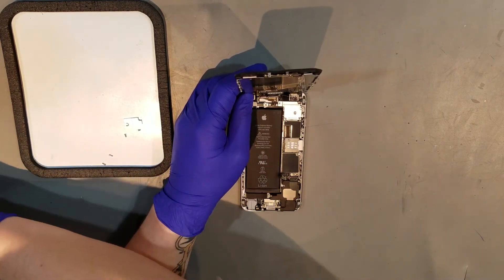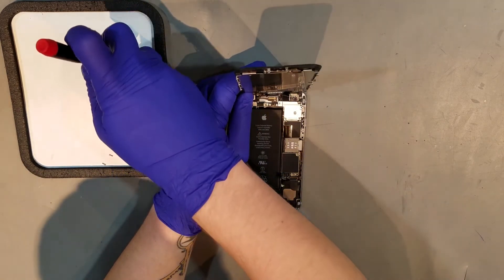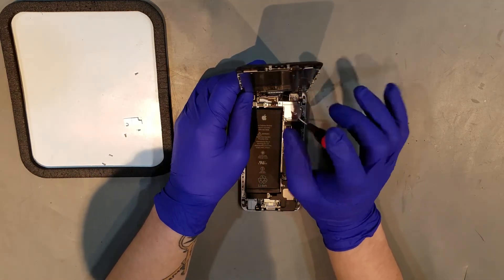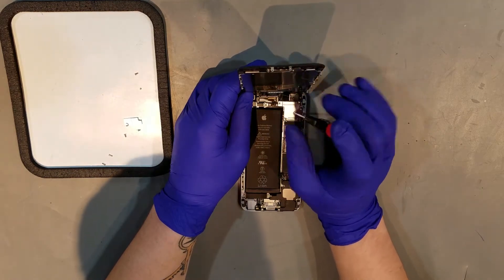To remove the display, you'll have to remove the five total Phillips screws that hold the shield on top of the clips for the display. These screws, if put back into the wrong spot, can cause damage to the logic board. For this reason, organizing your screws is strongly suggested.